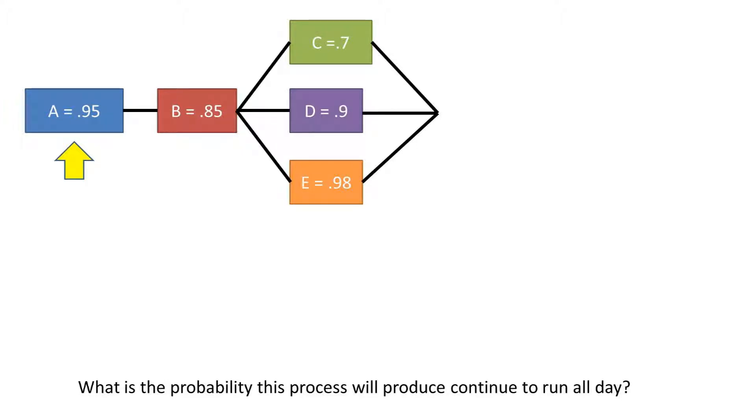In this problem, we have a process that the first machine in the process has a probability that it will work over the course of a day of 0.95 or 95%. The part or commodity being processed then moves on to another machine that has a probability it will work over the course of a day of 0.85 or 85%. And finally, the part moves through several machines that one must work in order for the line to continually produce parts.